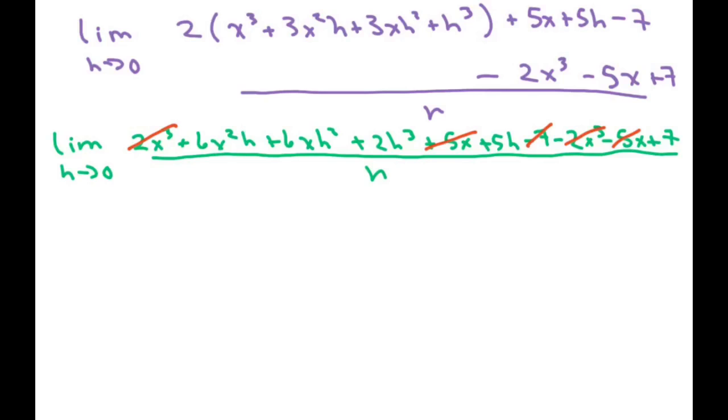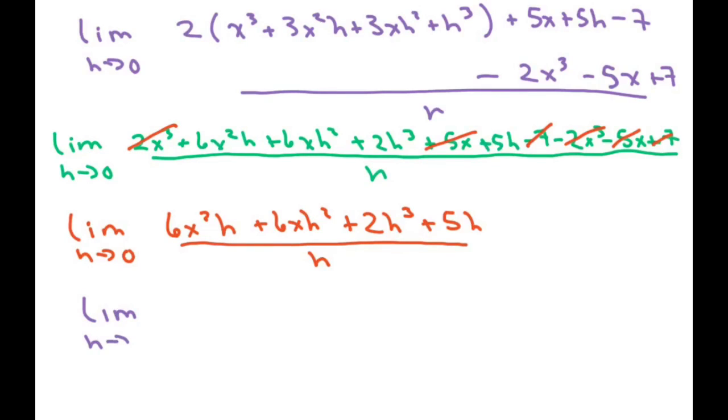And the negative 7 cancels out. So we're left with the limit as h approaches 0 of 6x²h + 6xh² + 2h³ + 5h all over h. Now let's factor out the h because we want to get rid of this h in the denominator.